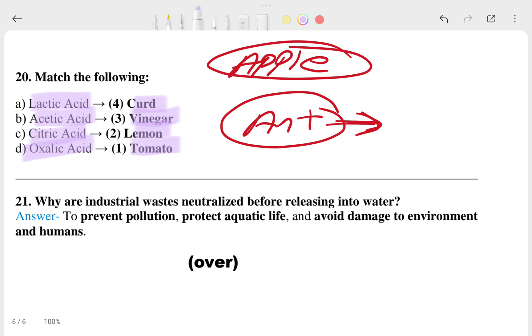Question 21: why are industrial wastes neutralized before releasing into water? That's the answer. I hope this chapter is clear and all the question answers are clear to you. Whenever you have doubt, you can match with your textbook. If you are looking for other subjects' question answers, go to the channel and check the playlist. If it's not there, you can comment. We will meet in the next video. Jai Hind.